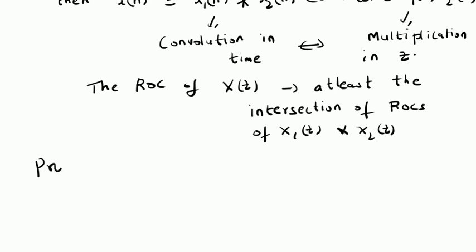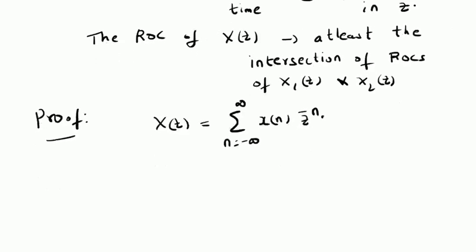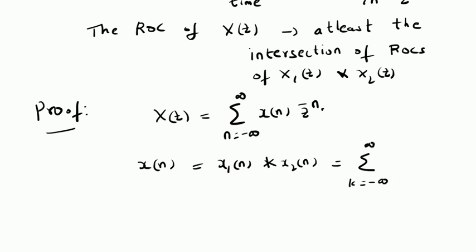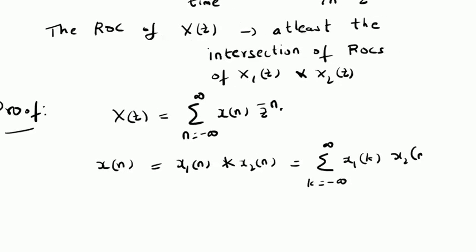Now let us look at the proof for this property. First, we apply the Z transform definition to the convolution sequence. The Z transform X of Z is by definition the summation from n equal to minus infinity to plus infinity of X of n times Z to the power minus n. Based on the definition of convolution, X of n can be written as the convolution of X1 of n with X2 of n, which by definition is the summation k from minus infinity to plus infinity of X1 of k multiplied by X2 of n minus k.